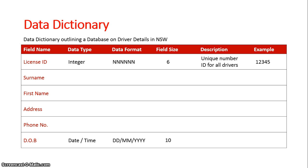The field size here is obviously 10, if we include the slashes. The description is 'driver's date of birth' and an example would be 08/05/1956.